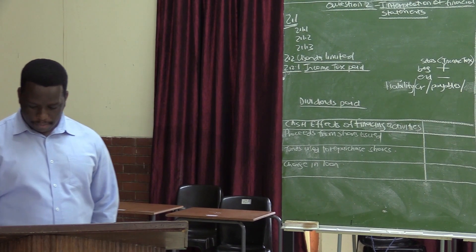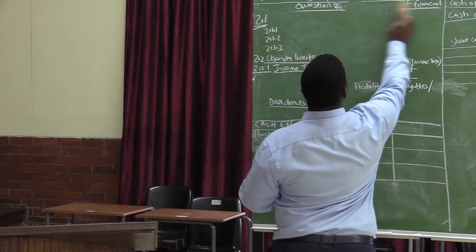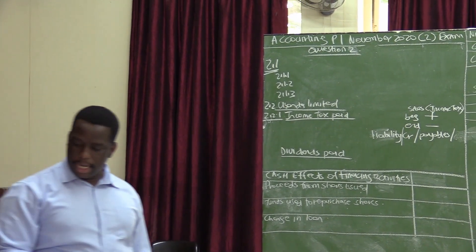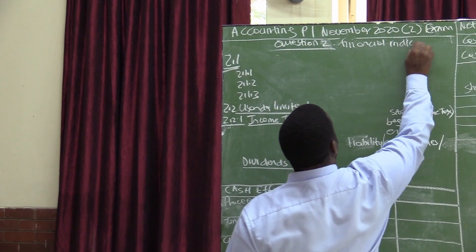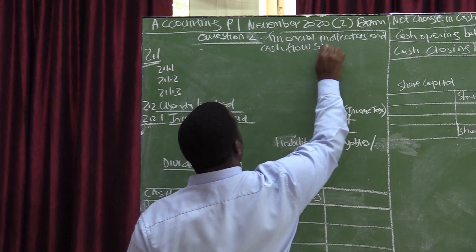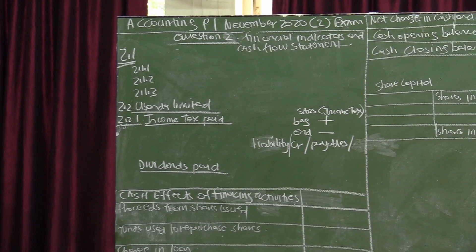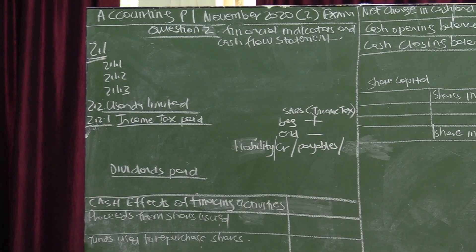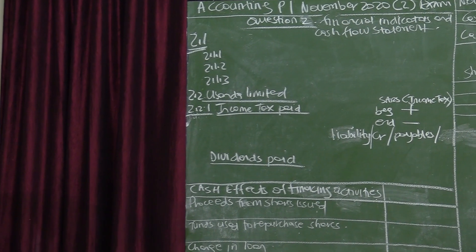So we are now in Question 2. Question 2 is based on the Financial Indicators and Cash Flow Statement. 2.1: Choose the correct words from those given in brackets. Write only the words next to the question number 2.1.1 to 2.1.3 in the answer book.